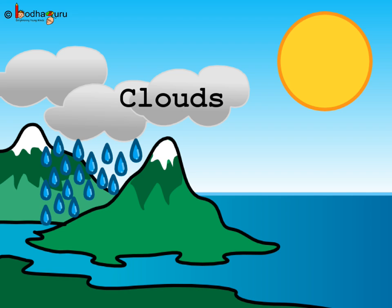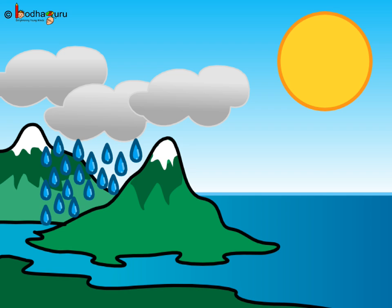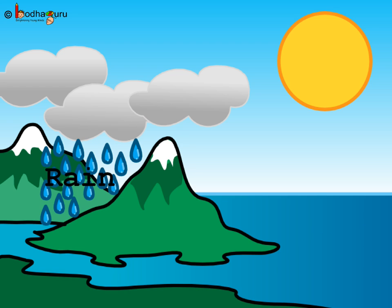But when there is too much collection of water droplets in the clouds, the clouds become heavy and can no longer hold that much water. The water starts to fall back in the form of rain. So we see that both evaporation and condensation result in rainfall.